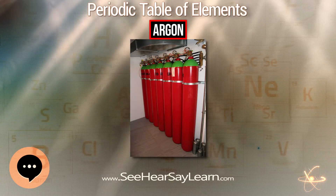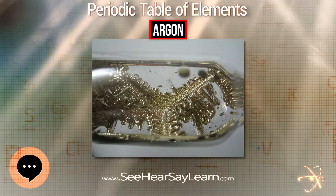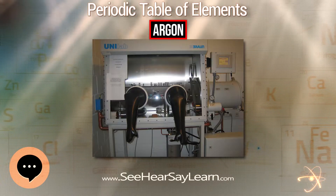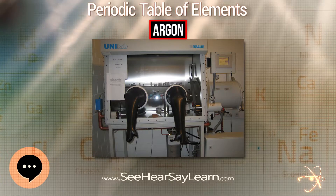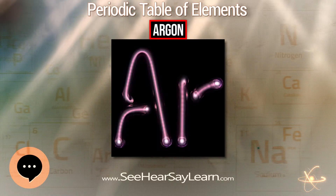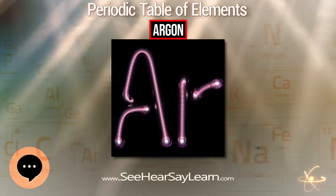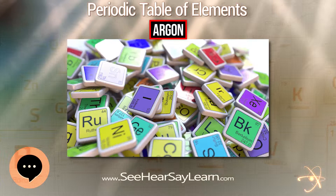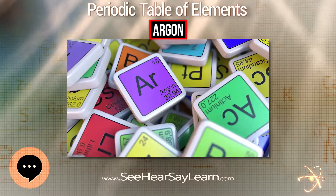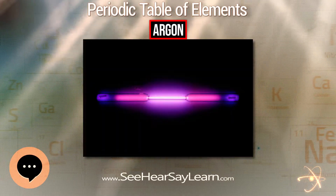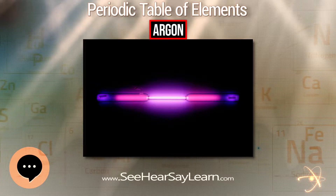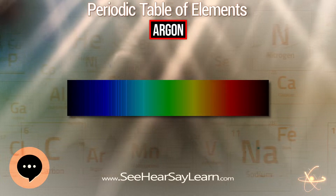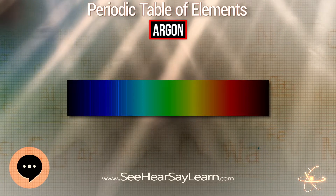Argon is named in reference to its chemical inactivity. An unreactive gas was suspected to be a component of air by Henry Cavendish in 1785. Argon was first isolated from air in 1894 by Lord Rayleigh and Sir William Ramsay at University College London, by removing oxygen, carbon dioxide, water, and nitrogen from a sample of clean air.